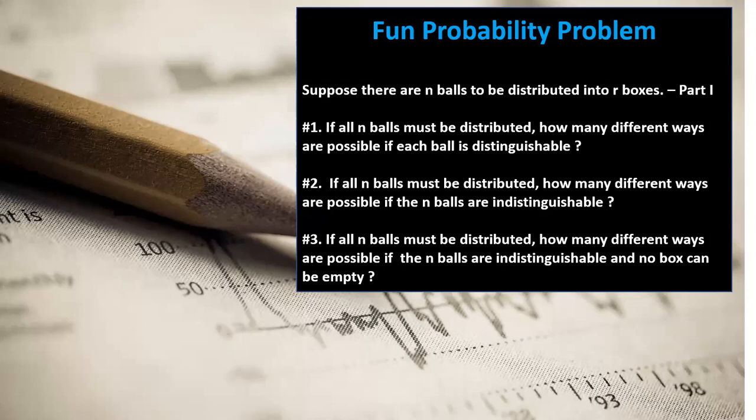The first part is finding the total number of different ways to distribute those balls. Part one assumes all balls are distinguishable — ball number one is different from ball number two, and so on. Part two asks the same question but all n balls are indistinguishable, meaning they are the same. Part three adds the condition that all n balls must be distributed, all balls are indistinguishable, and no box can be empty.